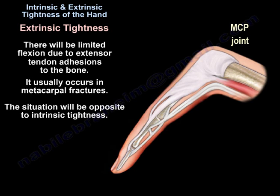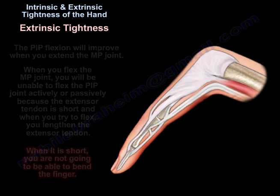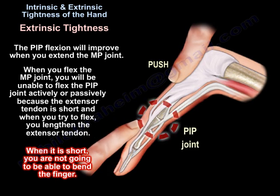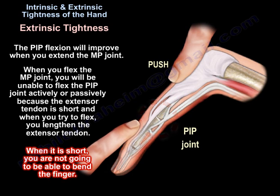In extrinsic tightness, there will be limited flexion due to extensor tendon adhesions to the bone. This usually occurs in metacarpal fractures. The situation is opposite to intrinsic tightness — PIP flexion will improve when you extend the MP joint.